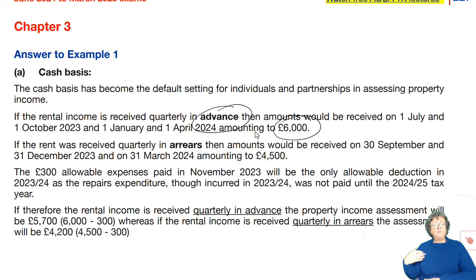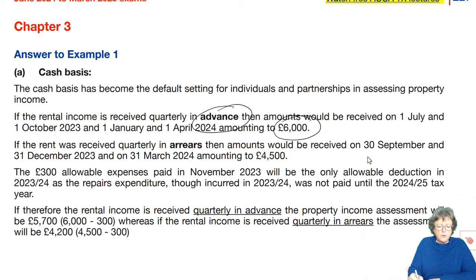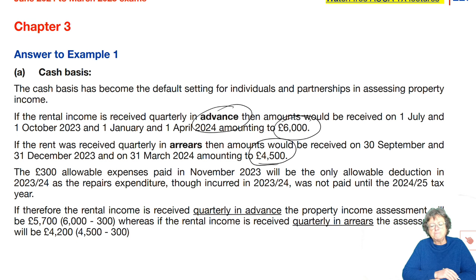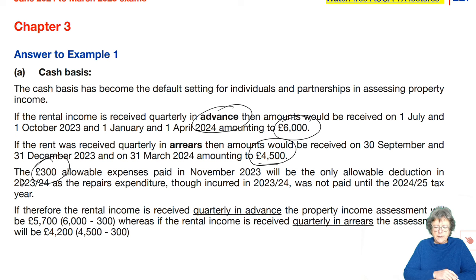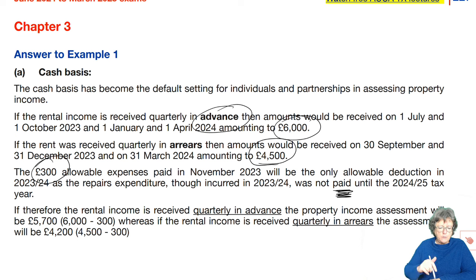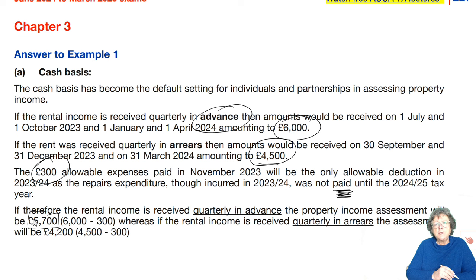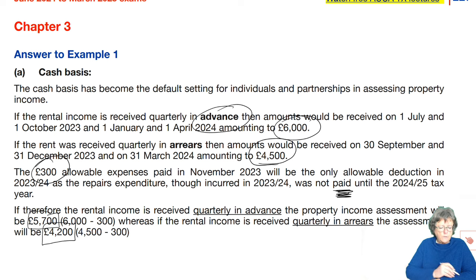In arrears, you're paying at the end. If it's received in arrears, then it would have been at the end of the 1st quarter, the end of the 2nd quarter, the end of the 3rd quarter — therefore only that amount. You see how it makes a difference. That expense is allowed because the other payment wasn't received — we're on a cash basis until the next tax year. Quarterly in advance: £6,000 less £300 = £5,700. If it's in arrears, that would be a different figure.